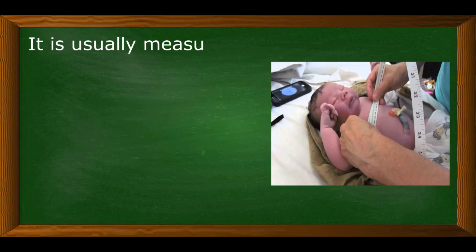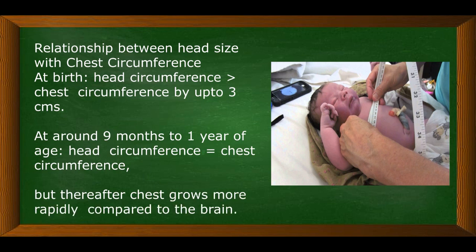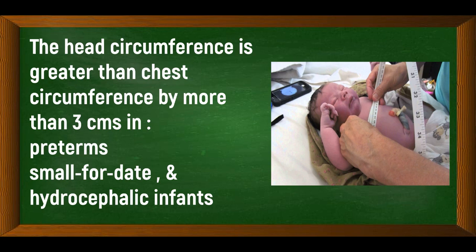Chest Circumference is measured at the level of the nipples, preferably in mid-inspiration. In children ≤5 years it is measured in lying position; above 5 years in standing position. At birth, head circumference is greater than chest circumference by up to 3 cm. At around 9 months to 1 year they are equal. Thereafter, the chest grows more rapidly. Head circumference greater than chest by more than 3 cm is seen in preterms, small-for-date, and hydrocephalic infants.